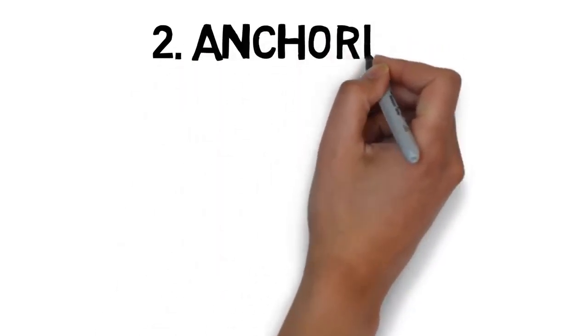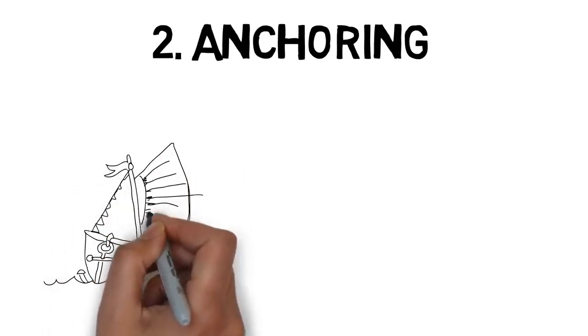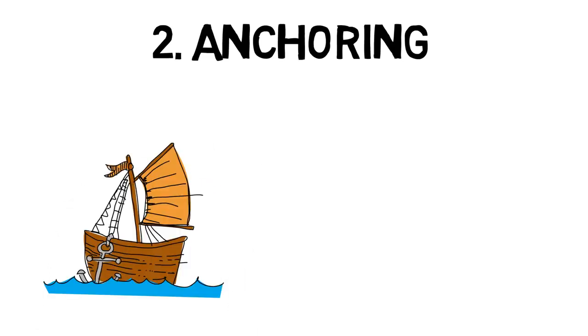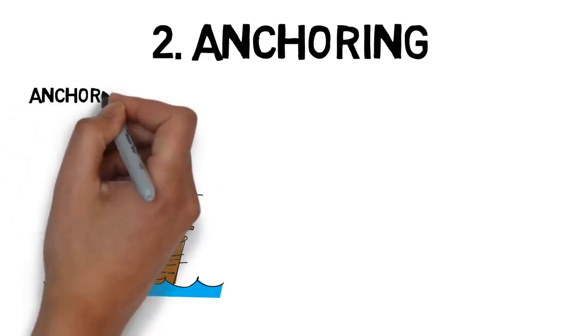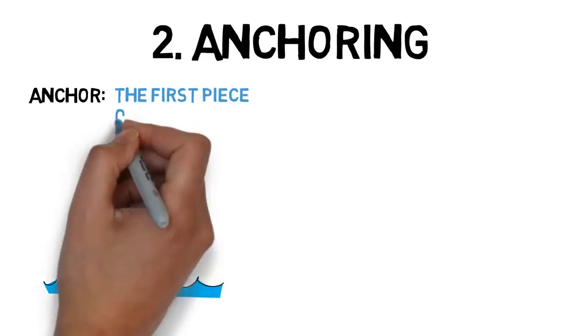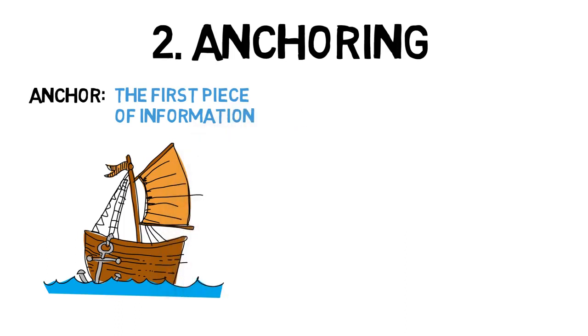Number 2: Anchoring. When making decisions, people make a lot of subconscious mistakes. One of those mistakes is known in the psychology world as anchoring. This means that people have a tendency to rely too much on the first piece of information that they have. This first piece of information is then called the anchor because it shapes the range of thinking going forward. Now that might be a little bit confusing, so let's consider a great example.